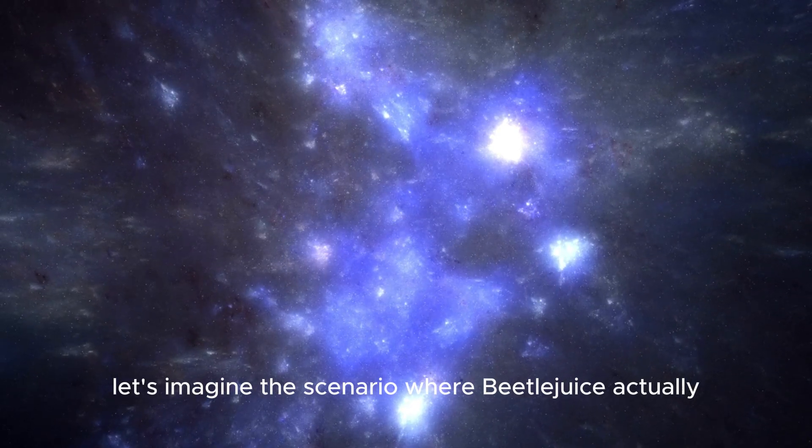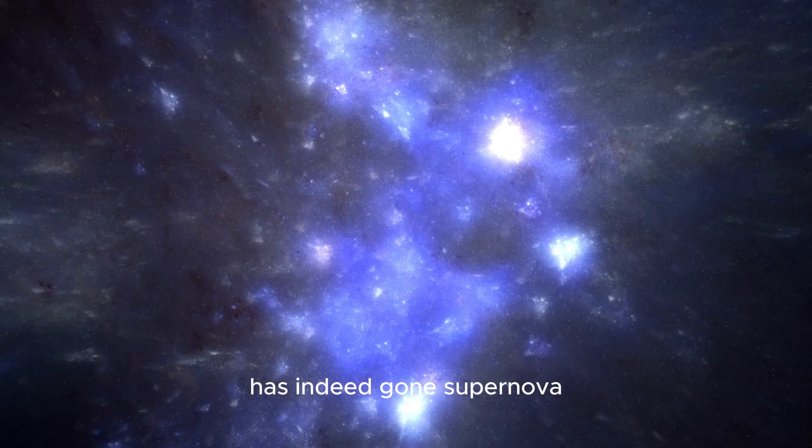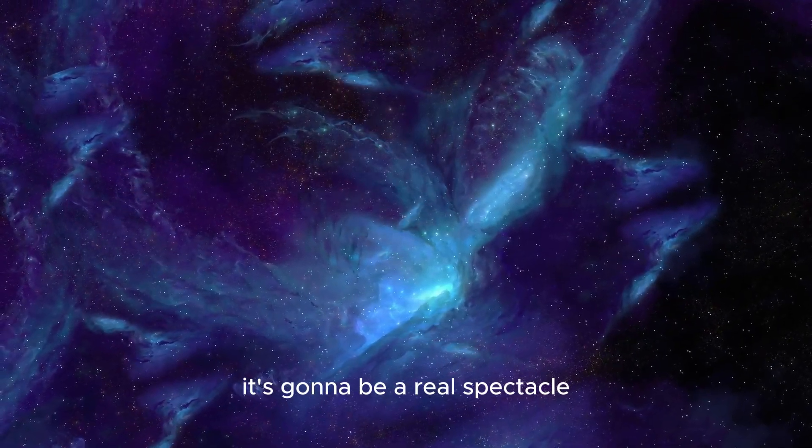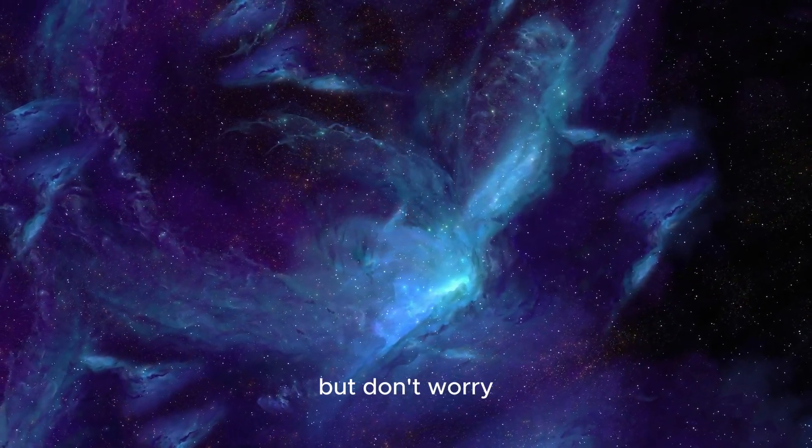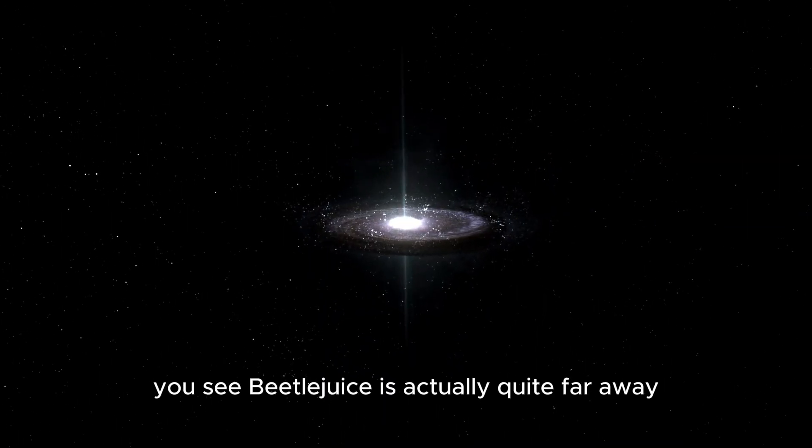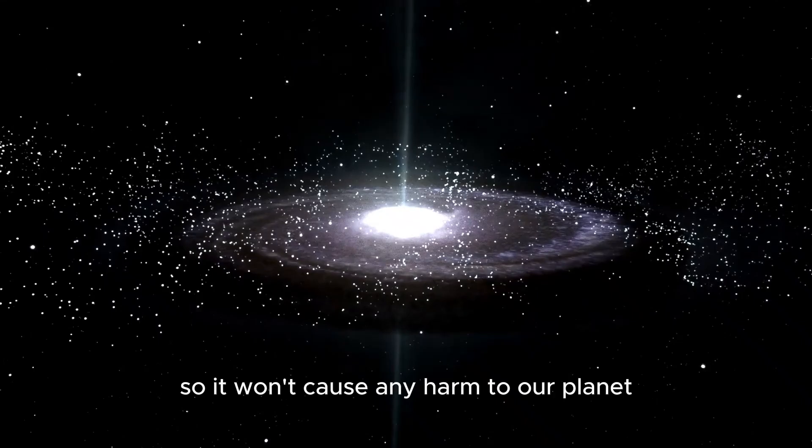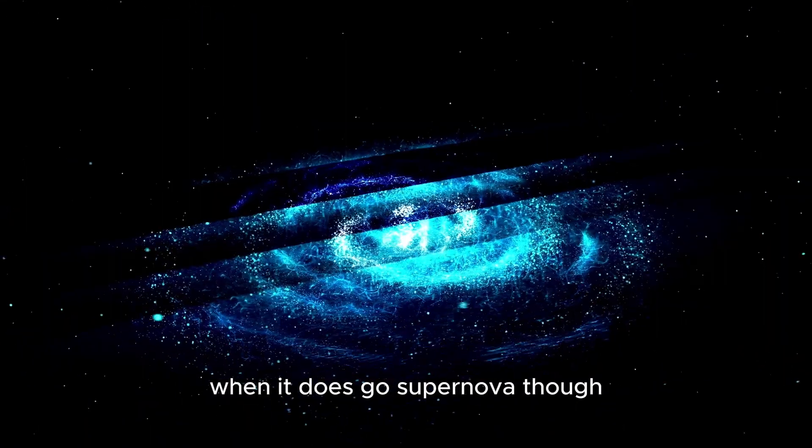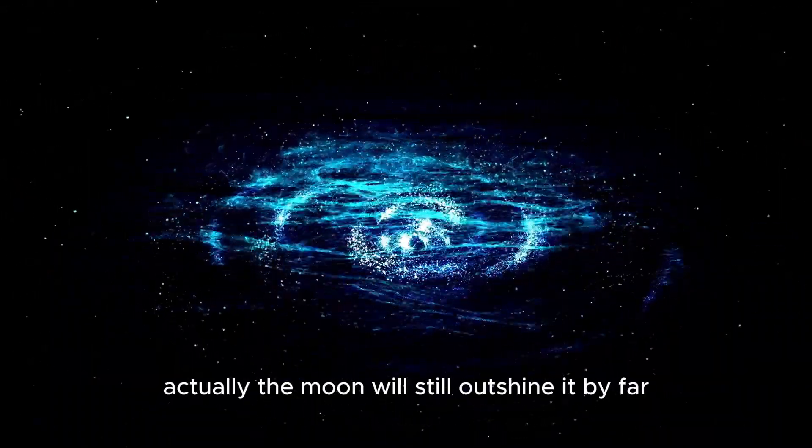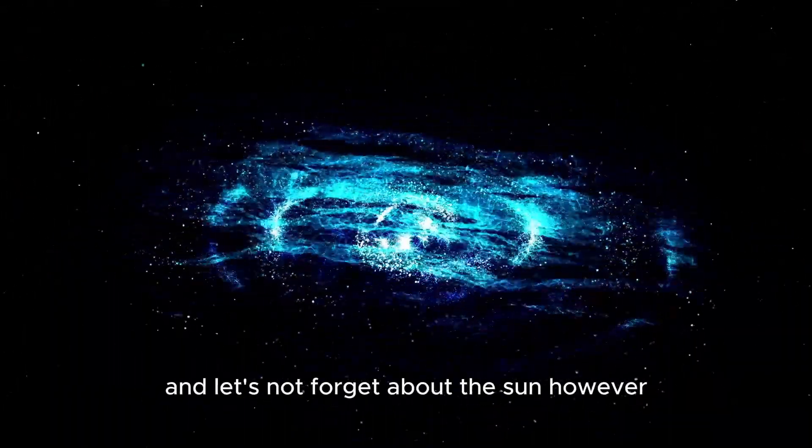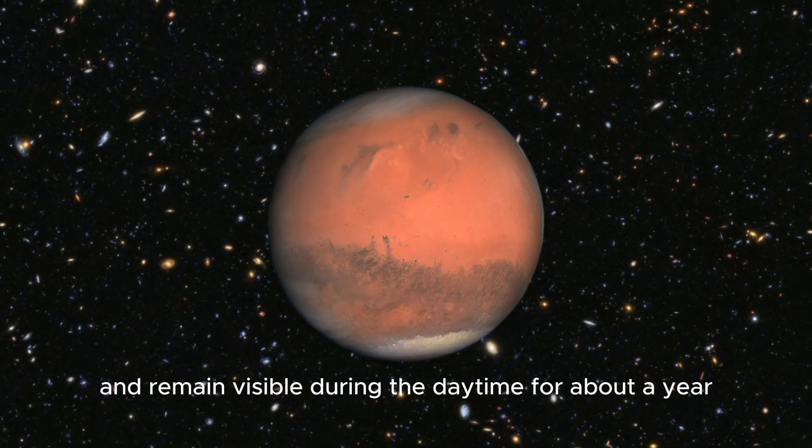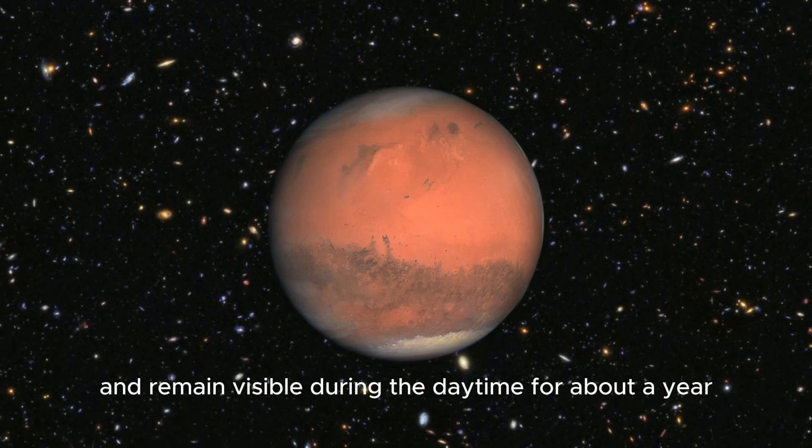Let's imagine the scenario where Betelgeuse actually has indeed gone supernova. How would it look? First things first, it's going to be a real spectacle. But don't worry, it's perfectly safe for us here on Earth. You see, Betelgeuse is actually quite far away so it won't cause any harm to our planet. When it does go supernova, though, it won't be the brightest object in the sky. Actually, the moon will still outshine it by far, and let's not forget about the sun. However, it would definitely cast its own shadows at night and remain visible during the daytime for about a year.